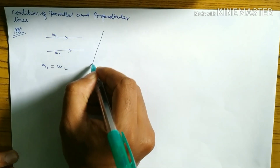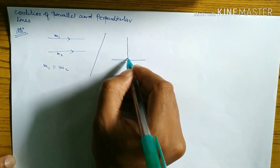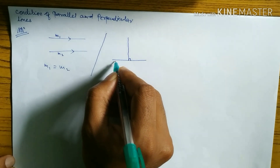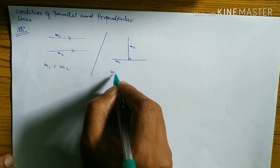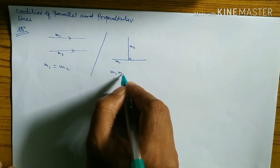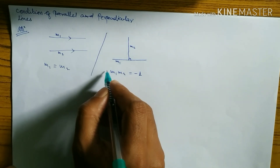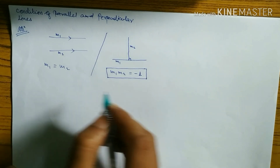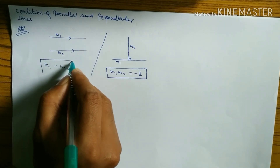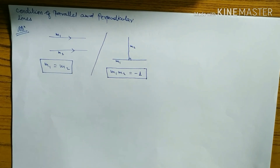For perpendicular lines, let's draw this. Suppose the slope of this line is m1 and the slope of this line is m2. The product of the slopes of both lines is equal to minus 1. When two lines are perpendicular, the product of slopes equals minus 1: m1 × m2 = -1. When two lines are parallel, slopes are equal: m1 = m2. When two lines are perpendicular, the product of slopes equals minus 1.